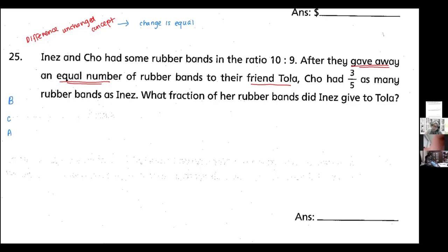Inez and Cho had some rubber bands in the ratio 10:9. This is Inez, this is Cho. This is my before information. After they gave away an equal number of rubber bands—'gave away' tells me this is my change. My change is equal.